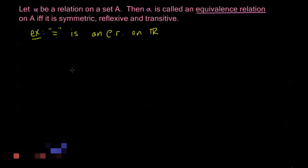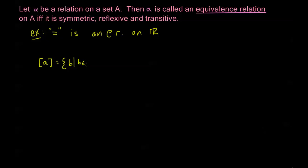In general, equivalence relations form a natural partition of the set A into what we call equivalence classes. Let's say that little a is an element of the set A. I'm going to define this equivalence class — we write it with these brackets. This is the equivalence class of A, defined as all of the elements B such that B is in the set A and A alpha B.